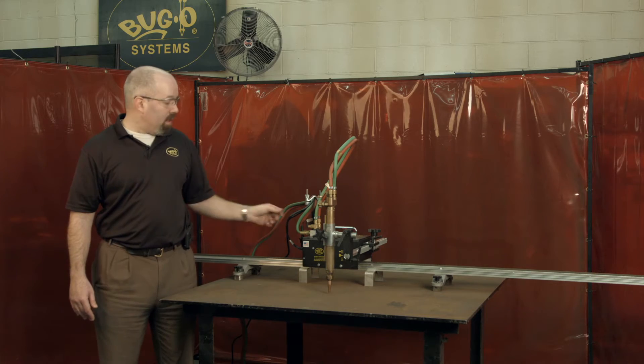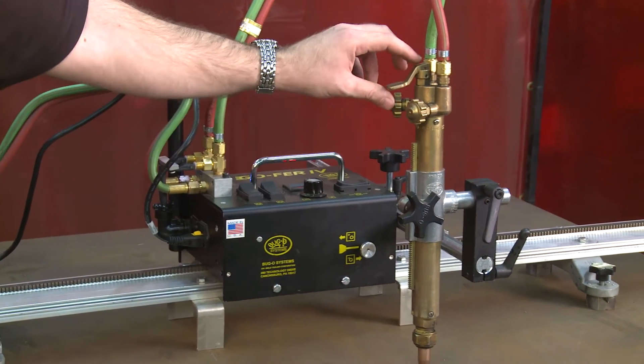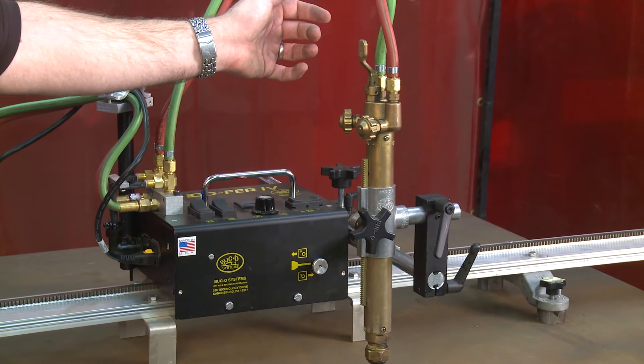When you're actually ready to make a cut, you would turn your gas manifold on, get your preheat, and then you would turn on your cutting oxygen to make your cut.